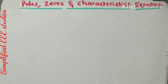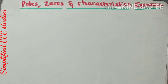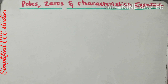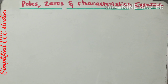In this session we have discussed about the importance of poles, zeros, and characteristic equation. In the upcoming session I am going to discuss about the type and order of a given transfer function, which is very important. Thank you very much for watching this video. If you found this channel interesting, please do subscribe. Thank you very much.